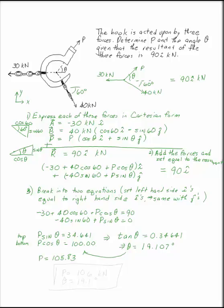Make sure at this point that you take this value of P and this value of theta and assure that it works in both of your equations. It's a quite reasonable immediate check. Now we can answer the question. Determine P and the angle theta. So what we want is: P is 106 kilonewtons and theta is 19.1 degrees.